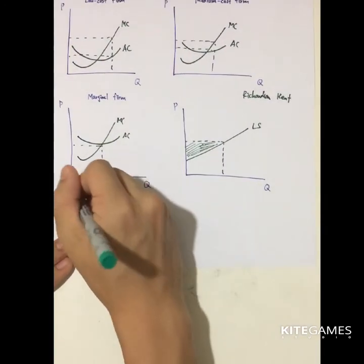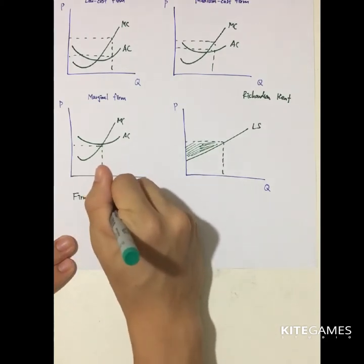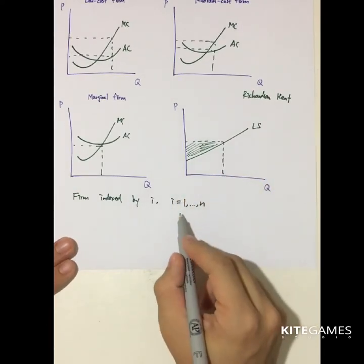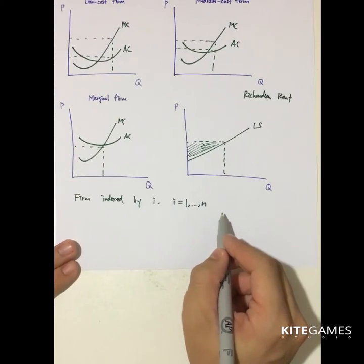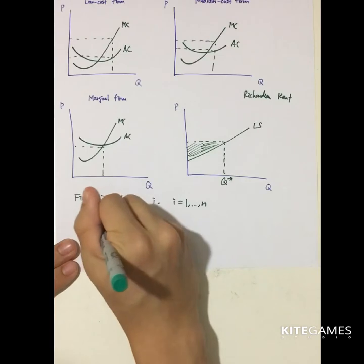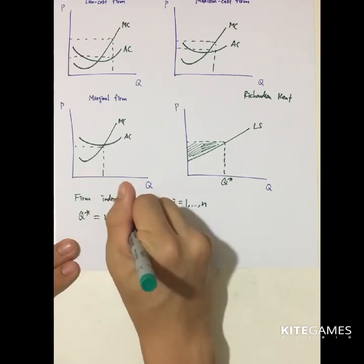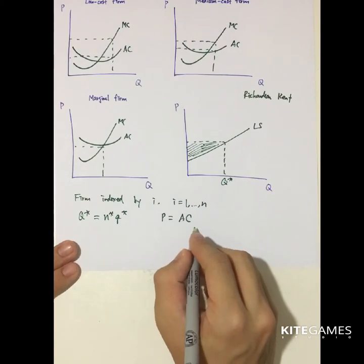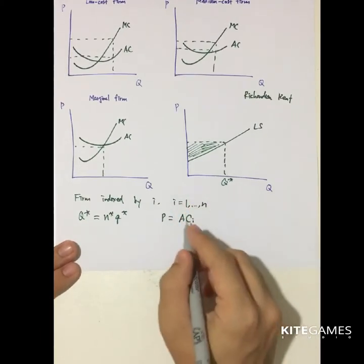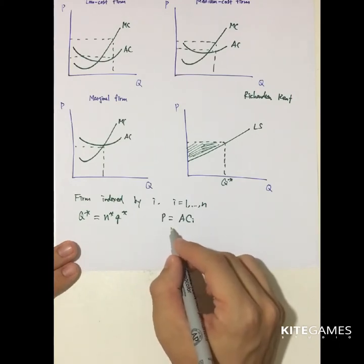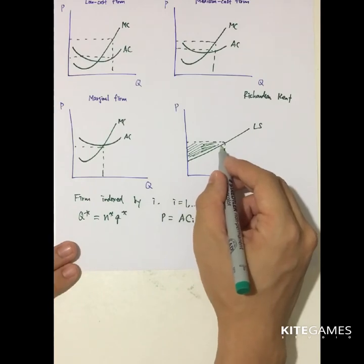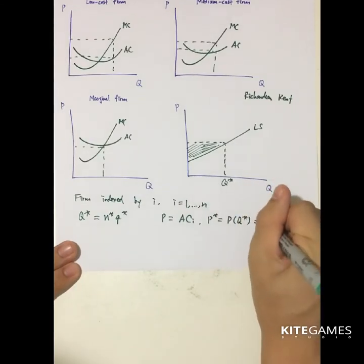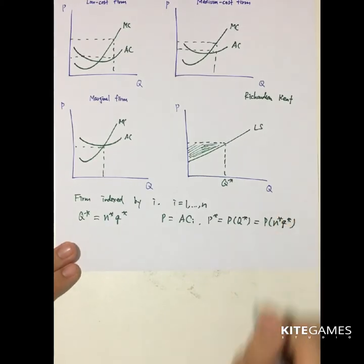Mathematically, index firms by i, where i goes from 1 to N — from the lowest cost to the highest cost firm. The optimal industry output Q equals N times individual output q. The price equals the average cost of the highest-cost firm, since lower-cost firms enter first until the highest-cost firm is reached. So the price P equals AC of firm N-star as a function of Q-star.